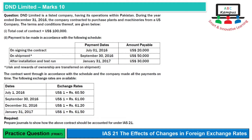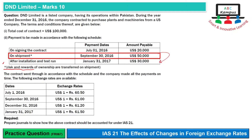Next, signing of contract ke baad jo hamaara next event hai, that is shipment. Shipment September 30, 2016 ko ho rahi hai. Is time par humne $50,000 bhi pay ki hain. Ab jo important baat hai ki us din risk and reward of ownership bhi transfer ho rahe hain. To hum poore $100,000 ka jo asset hai wo record kar lenge, kyunki ab uska risk and reward hamaara hai. 30 September ko jo hamaare paas rate hai, that is 61.